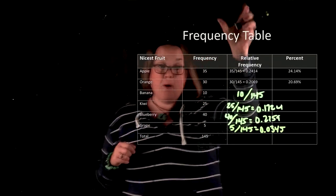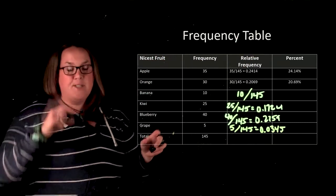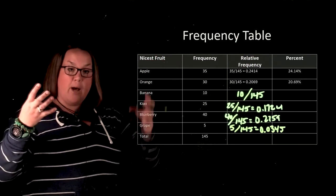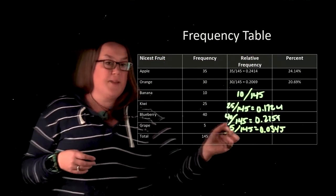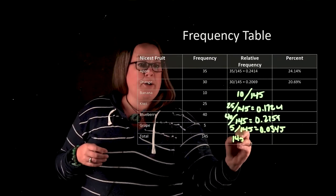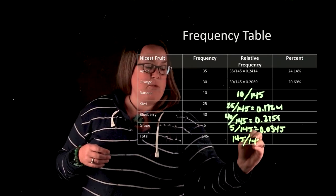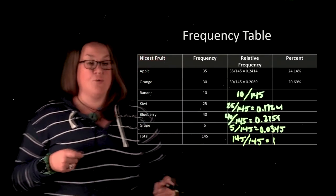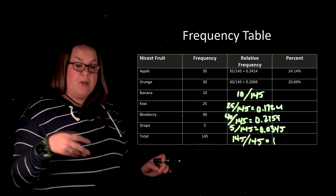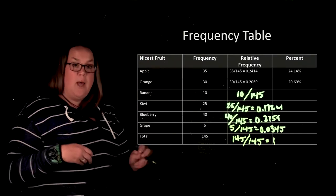Remember that with these, because a relative frequency is going to be all of the counts relative to the total, the sum of this column would end up being 145 out of 145, or it should sum to 1. It's a good way for you to check to make sure that you have all the observations.